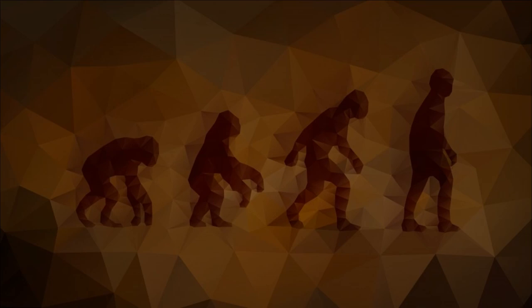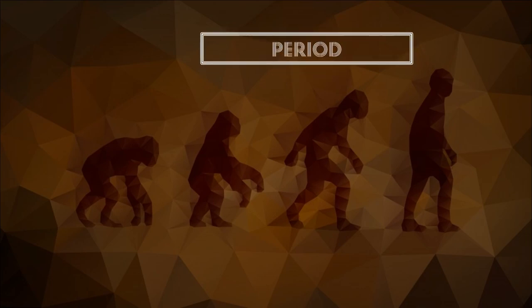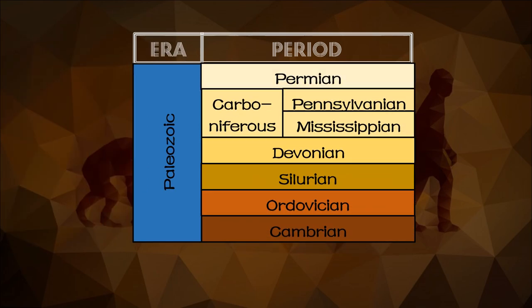If the units under aeons are called eras, the units under eras are called periods. The geologic eras are large interval units of time that encompass smaller intervals of time called periods. Each of the three eras of the Phanerozoic aeon are comprised of several periods, subject to the law of superposition and law of faunal succession. Let's start first with the Paleozoic era, which has seven periods.